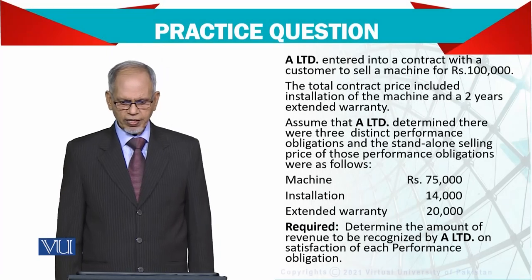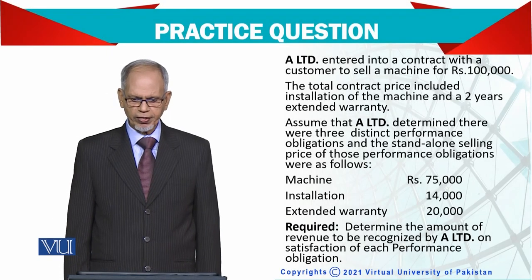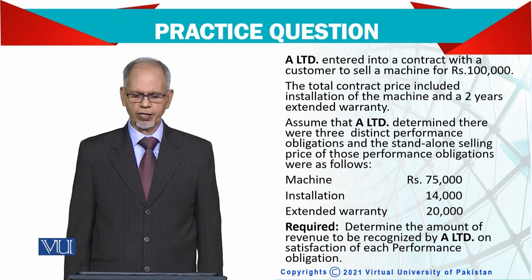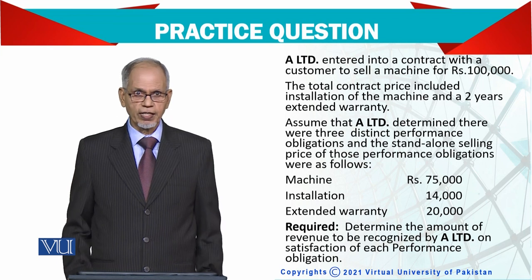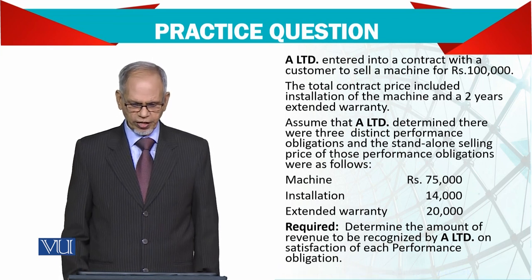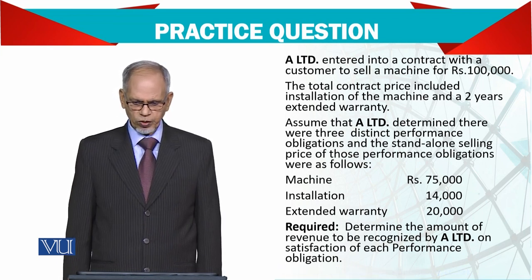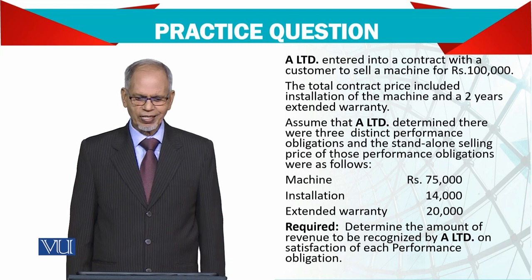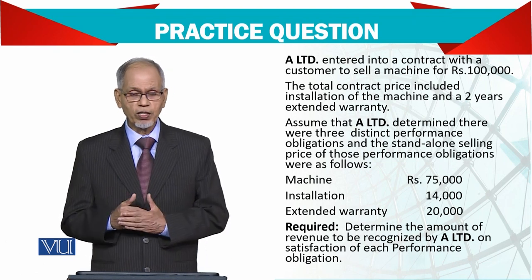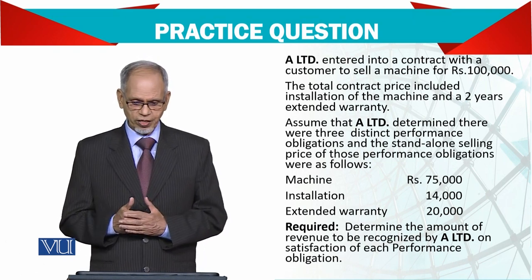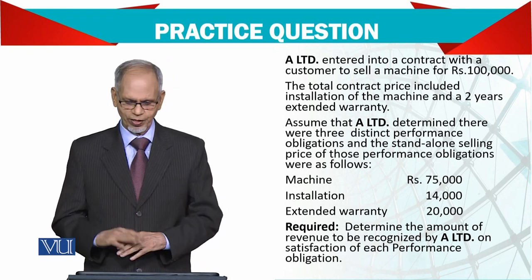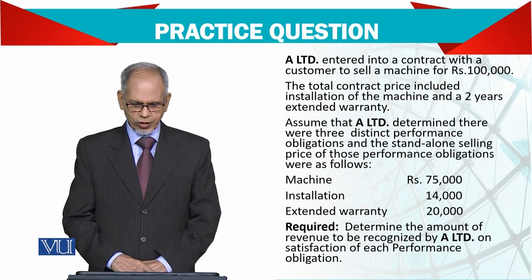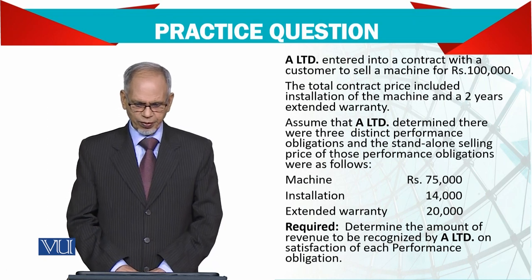A Limited entered into a contract with a customer to sell a machine for £100,000. The total contract price of £100,000 includes installation of the machine and a two-year extended warranty. So the machine cost, installation cost, and warranty cost together make up the total package of £100,000.